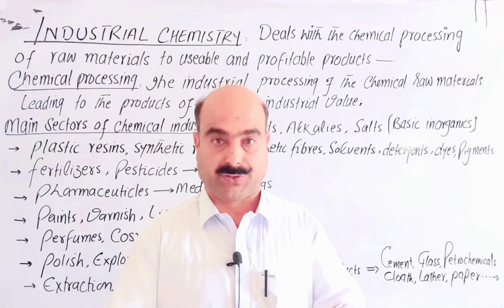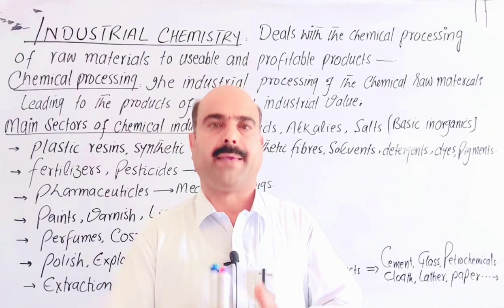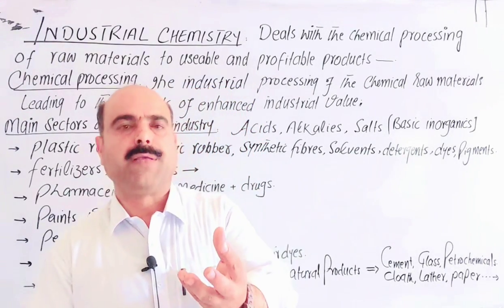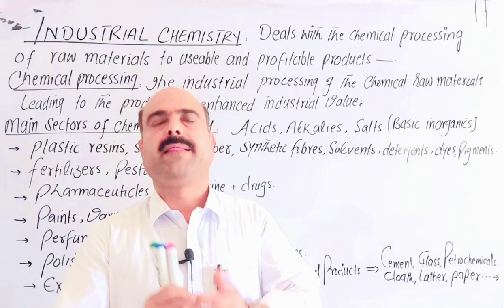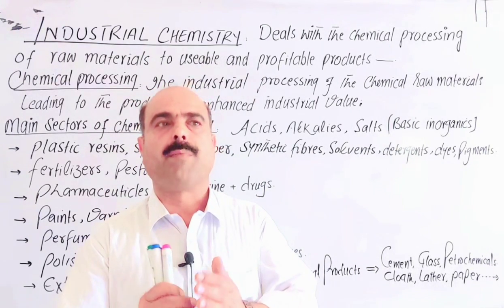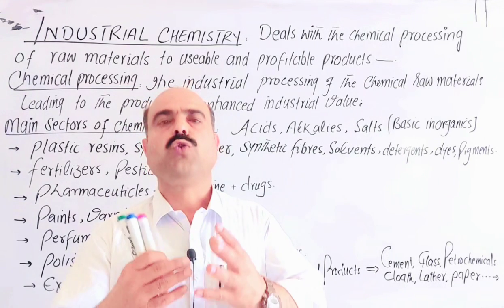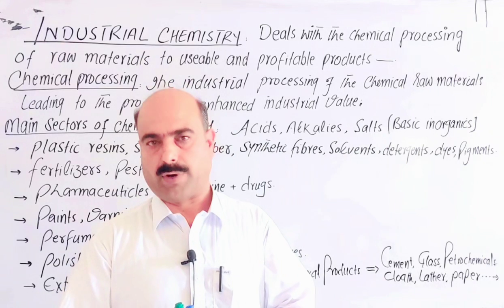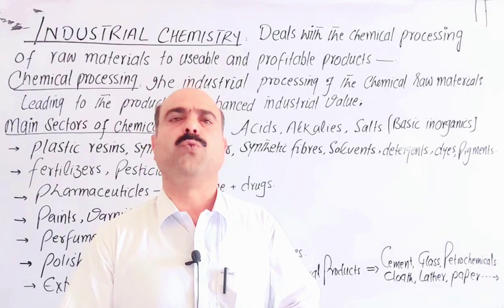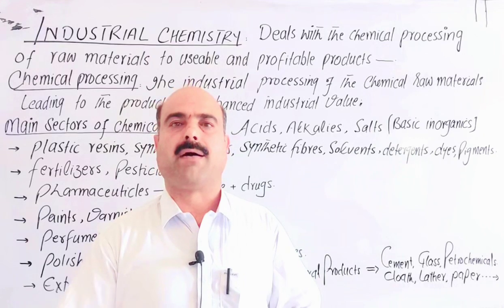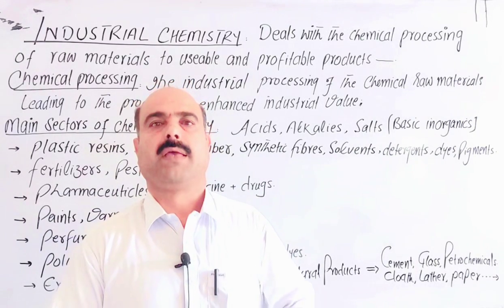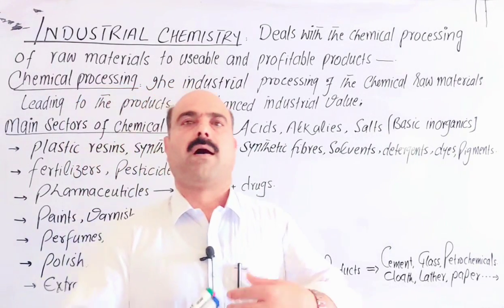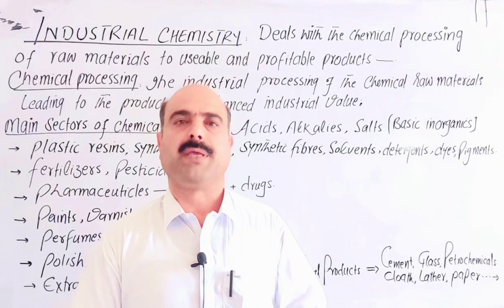What is industrial chemistry? First of all, I am going to define industrial chemistry. Industrial chemistry is the branch of chemistry which deals with the chemical processing of raw materials to usable and profitable products. It means that in industry, we use raw material — the basic material — which is processed in many steps in order to produce new products of the desired qualities, having low cost and of great importance for human beings in daily life.